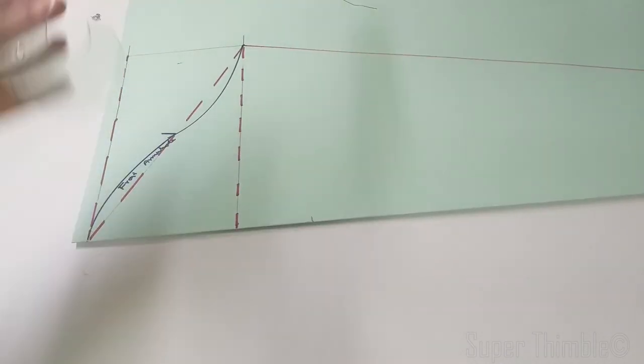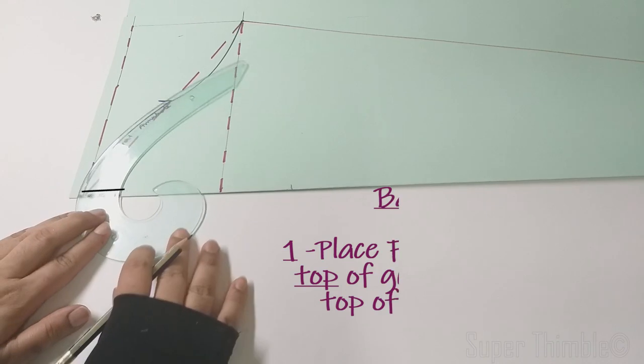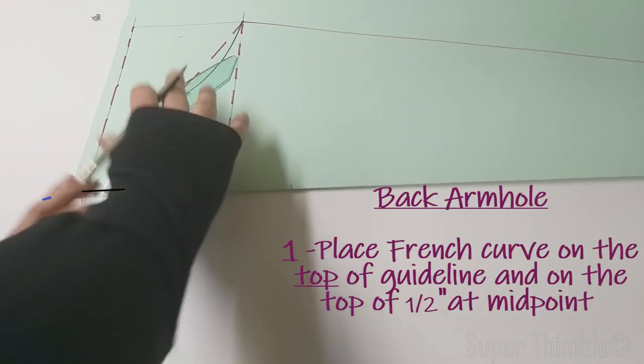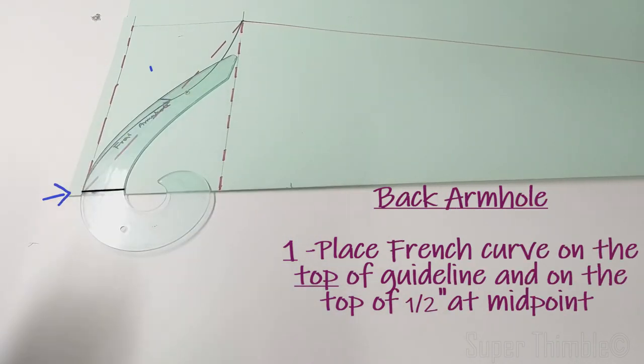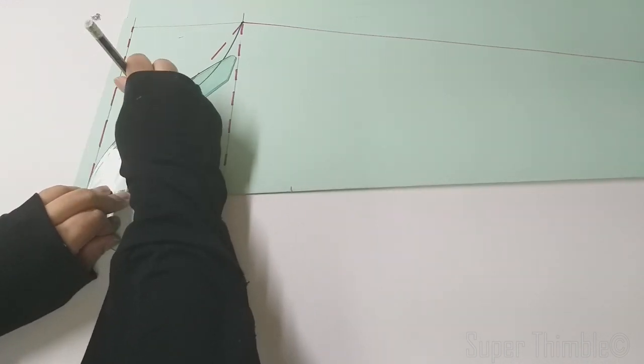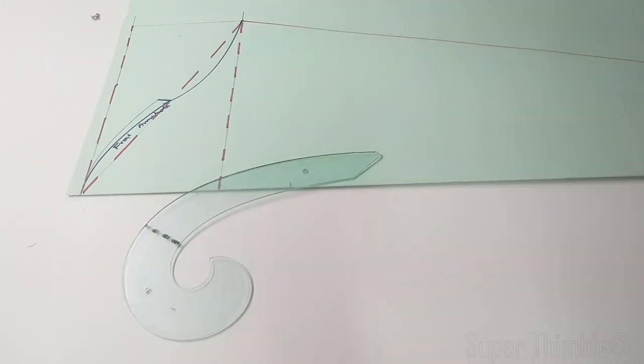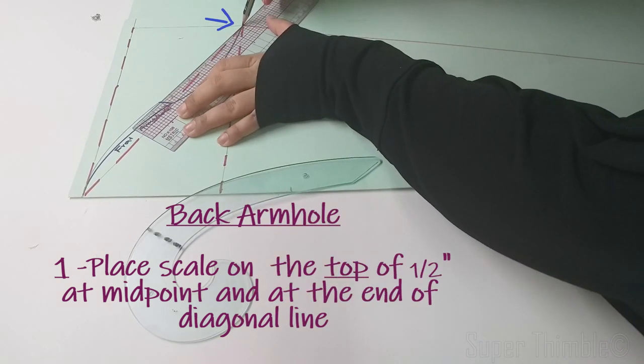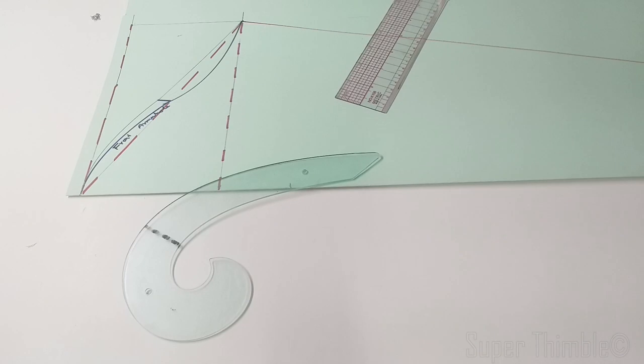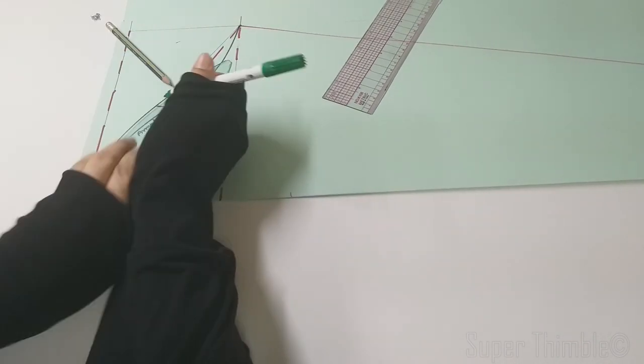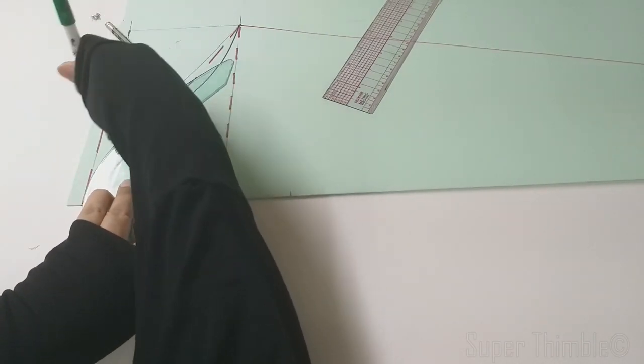Back armhole, again in 2 steps. Place the French curve mark on the top of the guideline and match the curve with the top half inch of the midpoint. For the rest, draw a straight line. Use a different color to differentiate the curves.